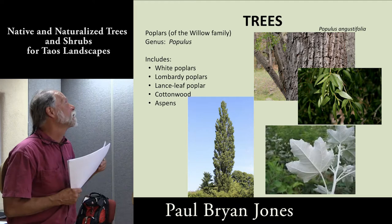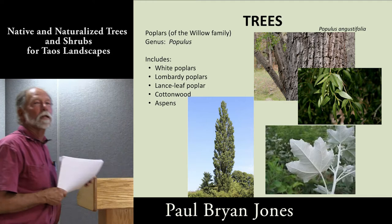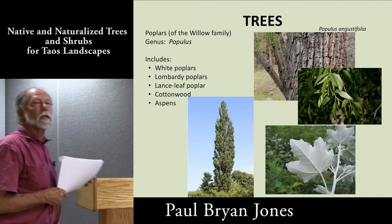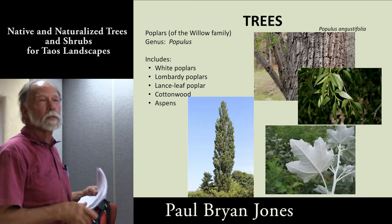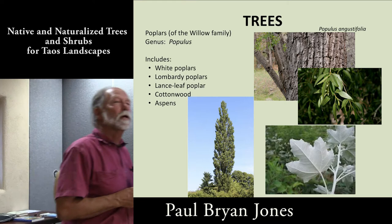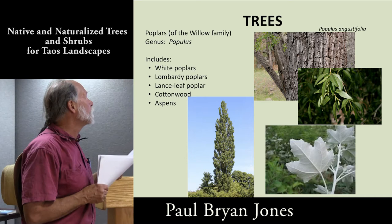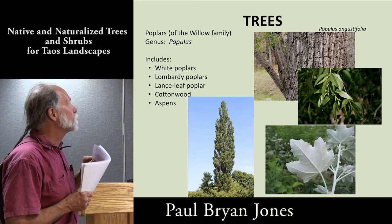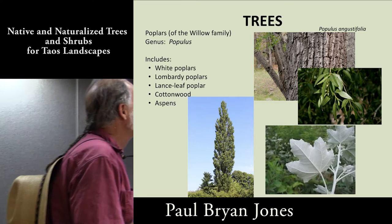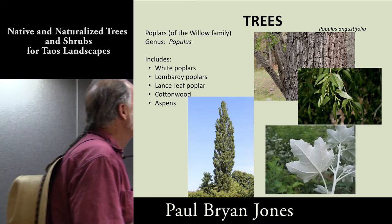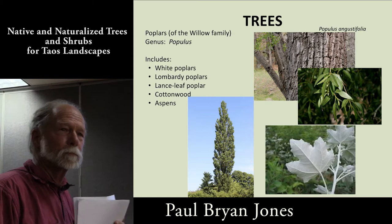Trees — poplars in the willow family, genus Populus. Everybody knows the white poplar, which people call silver leaf — that's the underside of the leaf. The Lombardy is fast-growing but also fast-dying; it can grow seven to nine feet a year and be gone in 20 to 25 years. The lance leaf cottonwood is really tough and we have a lot of those around. We have Rio Grande cottonwoods and Fremont cottonwoods here. I was shown all three species in Baca Park — Fremont, lance leaf, and Rio Grande.